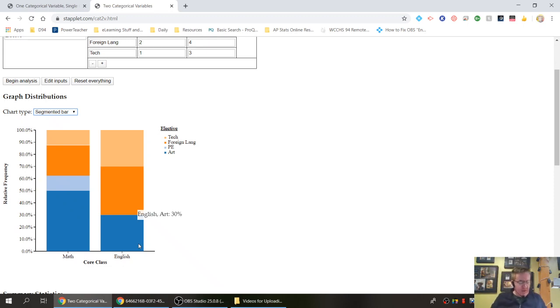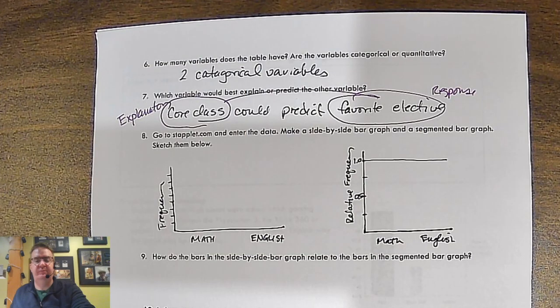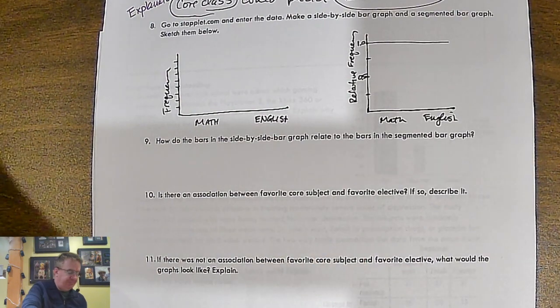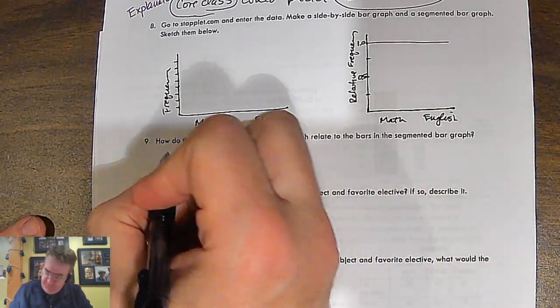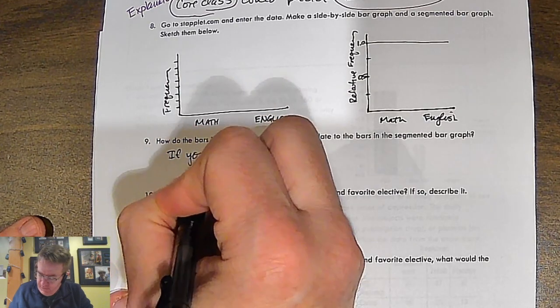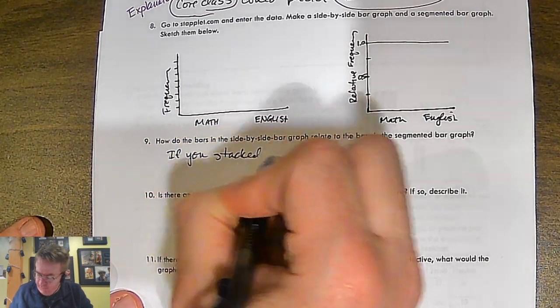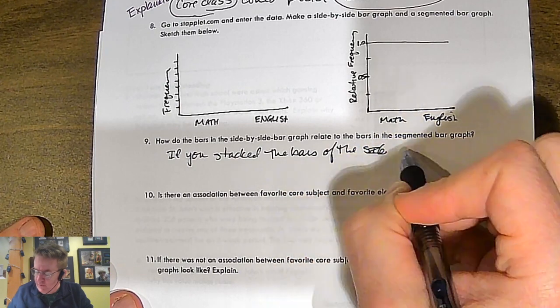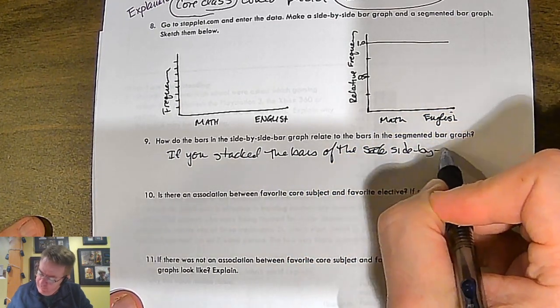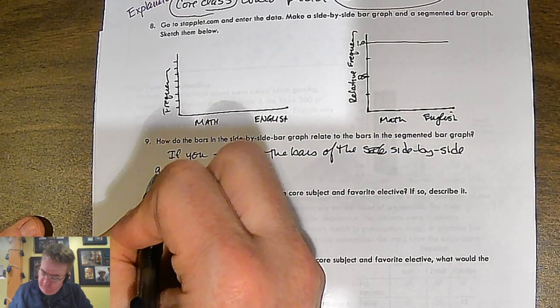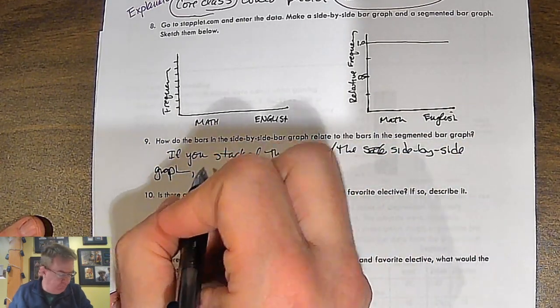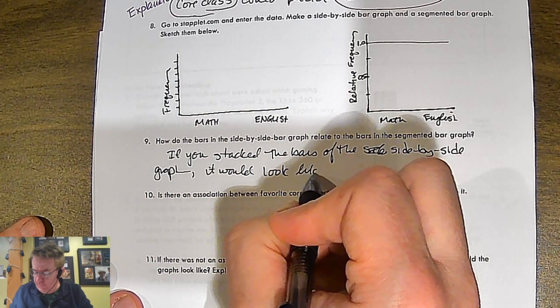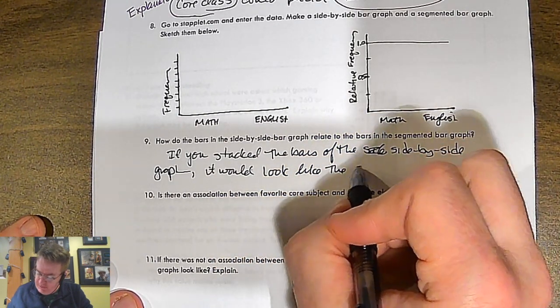So I would have you draw those things out. So you draw all those things out here. And then, again, how do the bar and bar side-by-side relate? If you stack the bars of the side-by-side graph, it would look like the segmented bar chart.